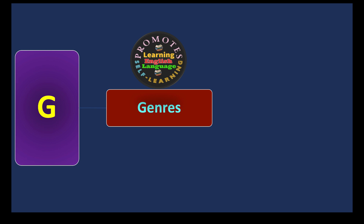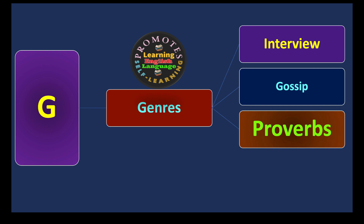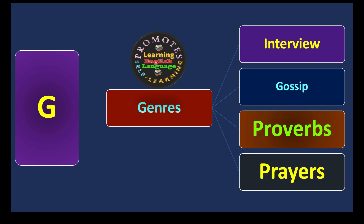G stands for Genres. Genres may include interviews, gossip, proverbs, prayers, and so on. These are the eight fundamental principles through which we communicate and express our language. Delhiem's model of speaking is a linguistic model that in modern times has attained a lot of attention. Hope you understand the concept — thank you.